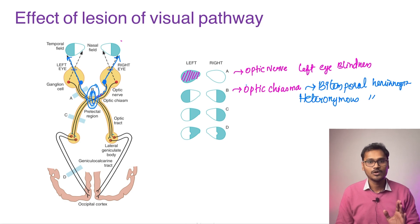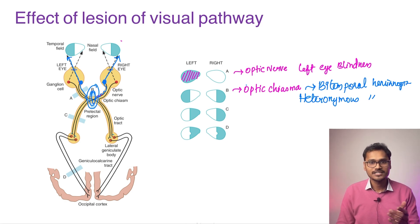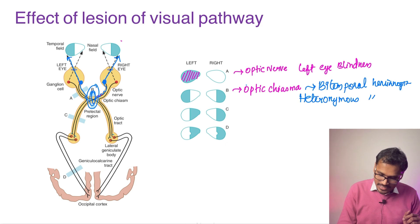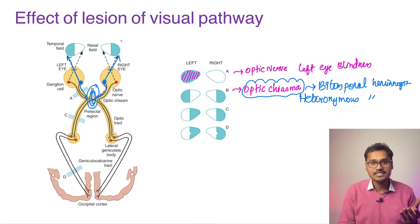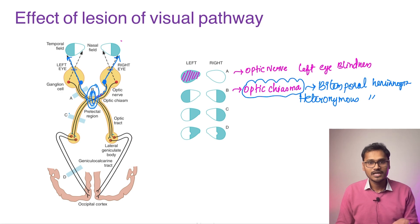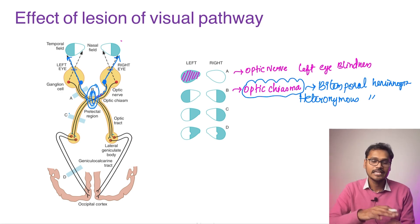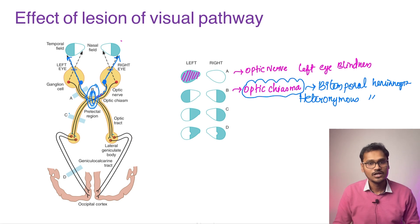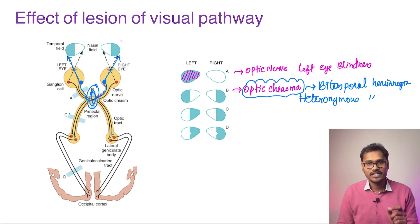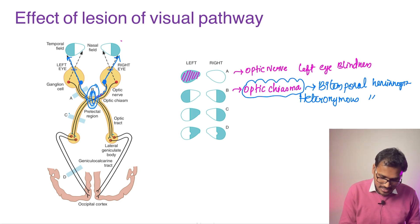The optic chiasma is a constant exam question — in viva, spot, or written exams — because it is highly prone to injury from pituitary adenoma. The pituitary gland lies directly below the optic chiasma, so a pituitary tumor is the first thing to compress this crossing region.